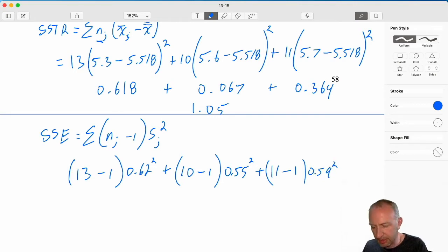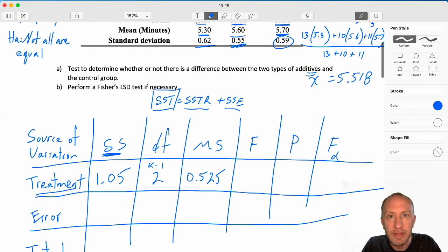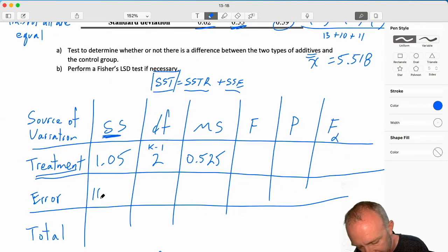And here I go 12 times 0.62 squared plus 9 times 0.55 squared plus 10 times 0.59 squared. And that gives me SSE of 10.82.